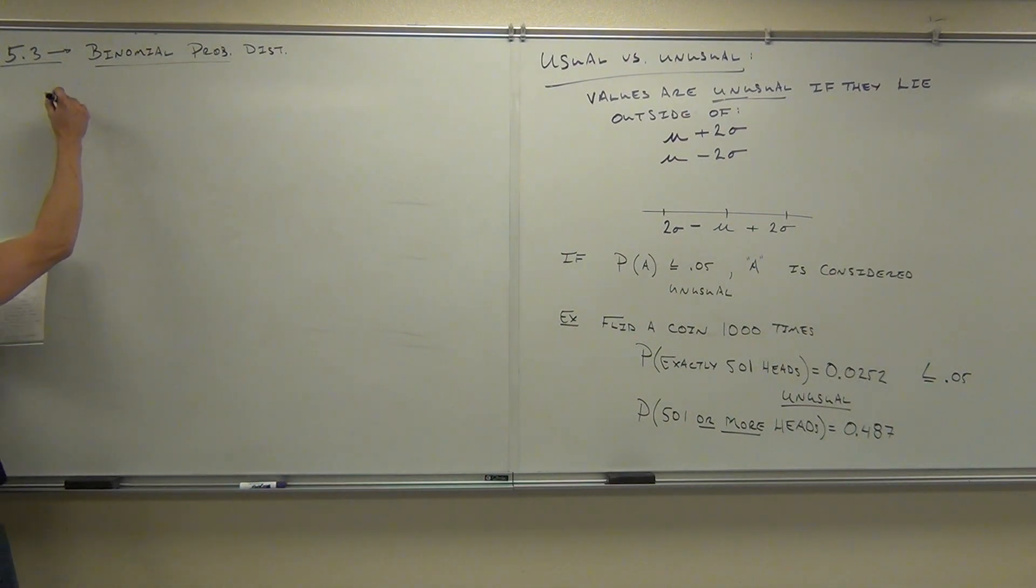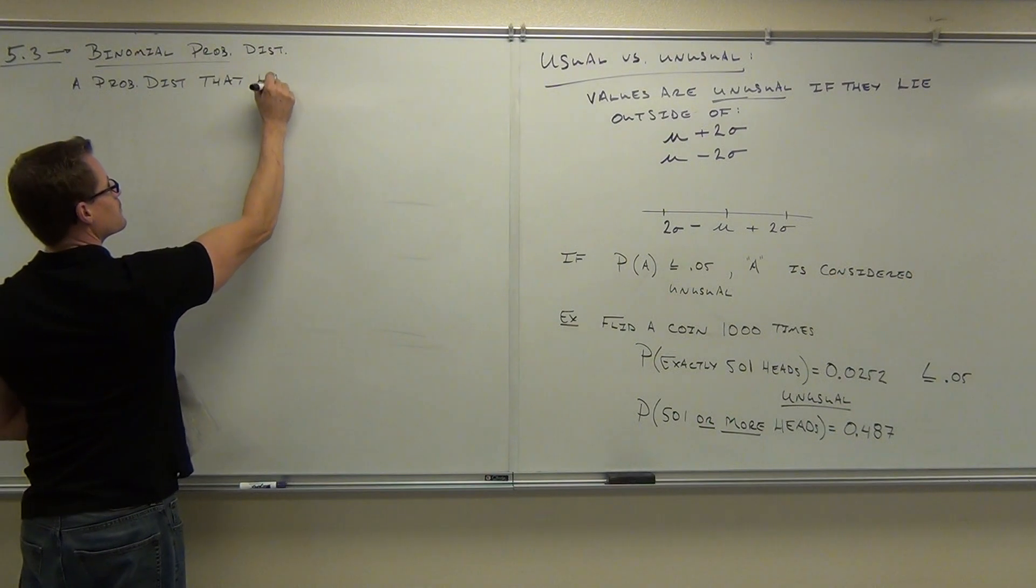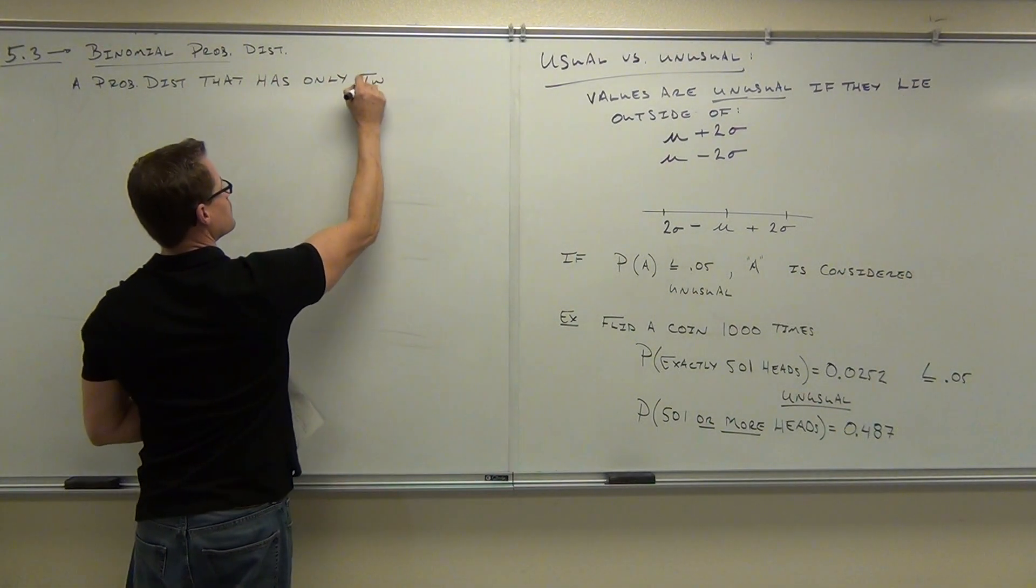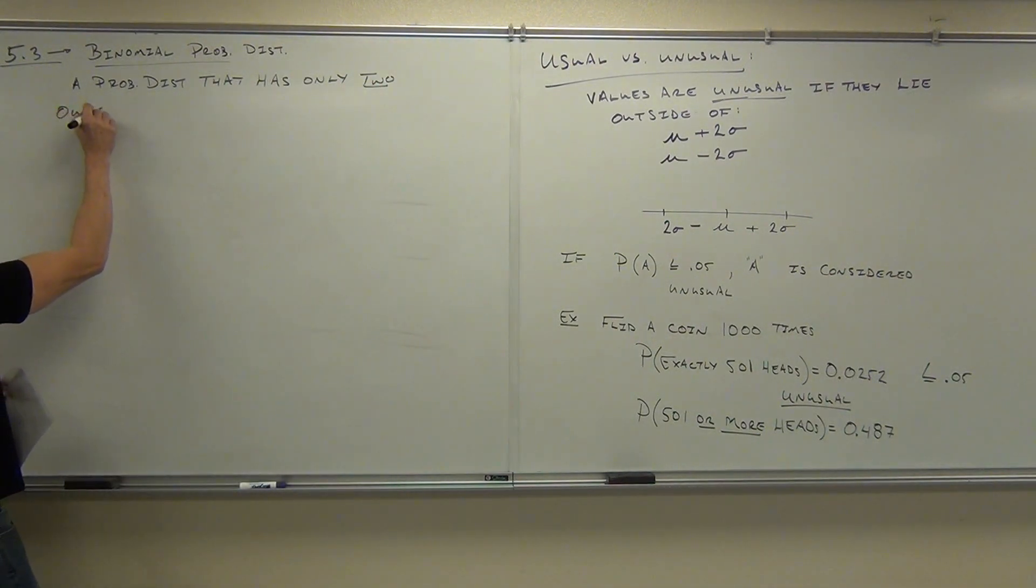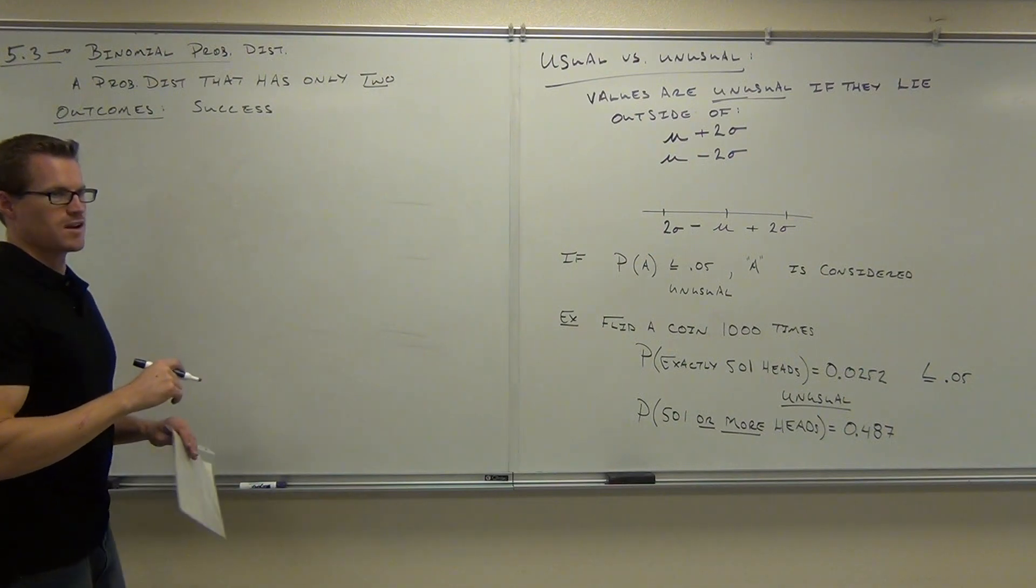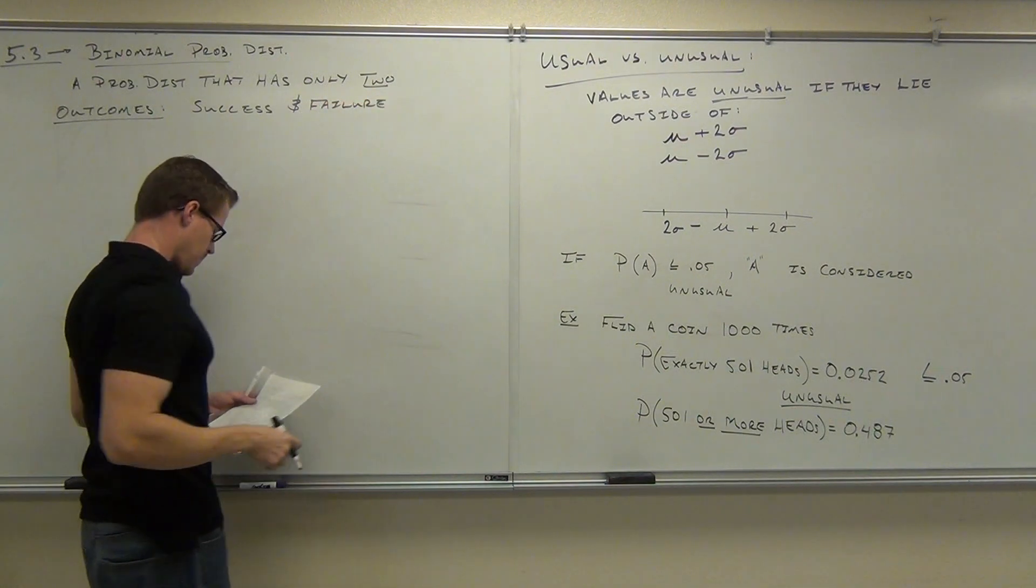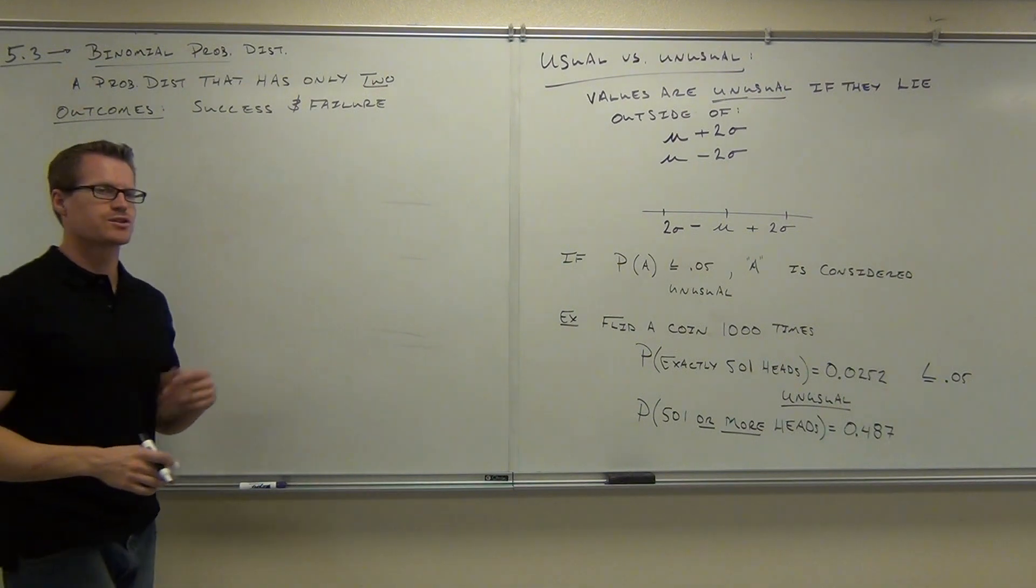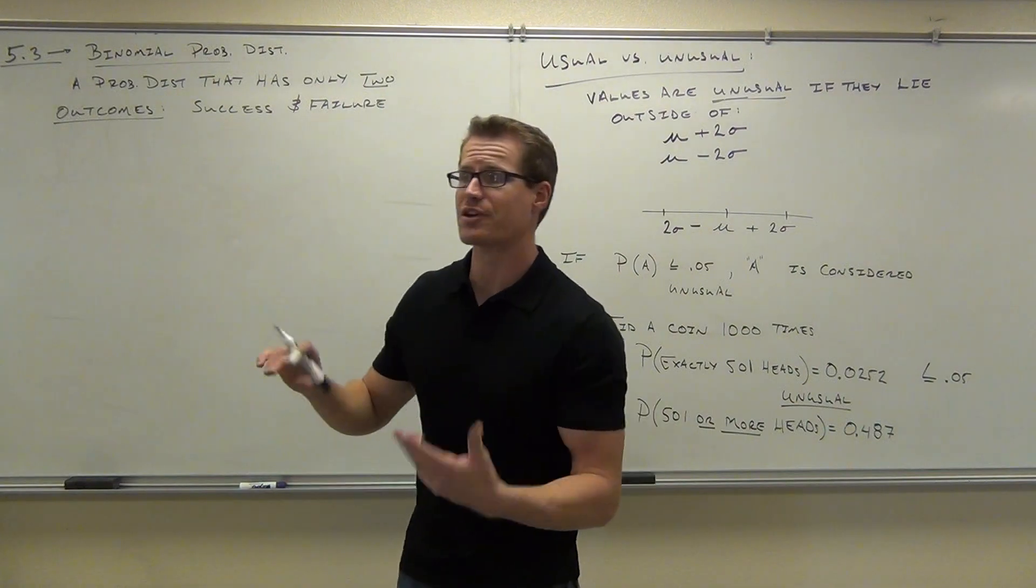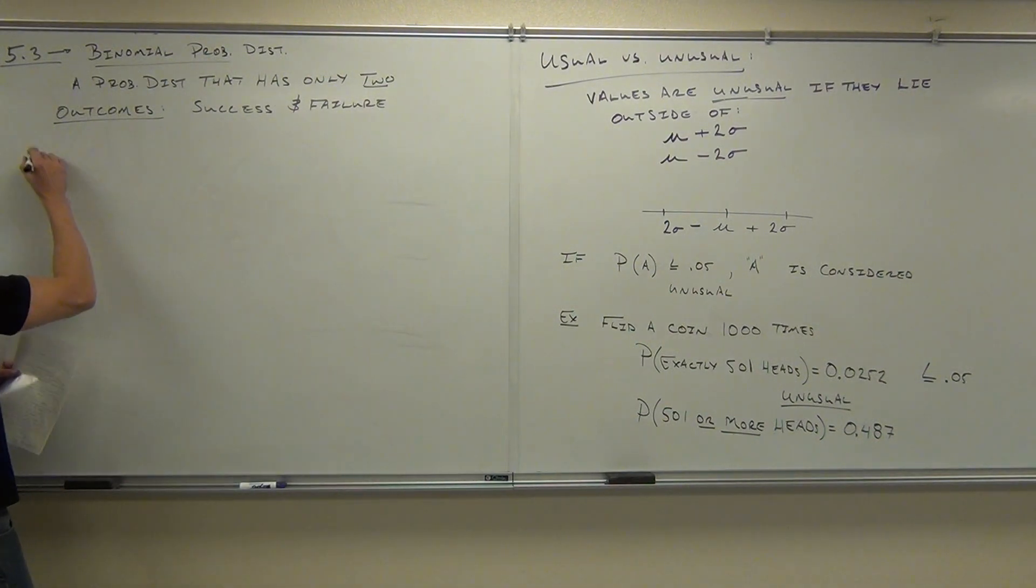We categorize our two outcomes as a success or a failure, so there's only two of them - binomial. A type of probability distribution where there are only two outcomes. Now there's a few things you need to know about a binomial probability distribution before we actually do any examples. That's some vocabulary, symbolization, notation, and what it takes to even have this binomial distribution.